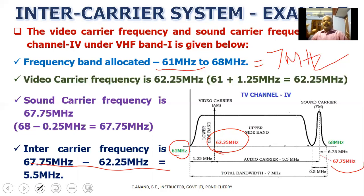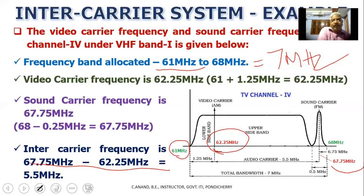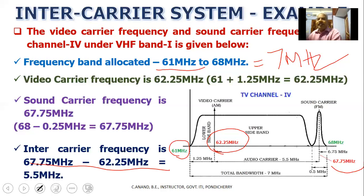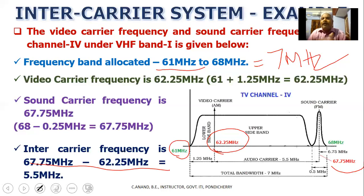So in a channel, the video carrier and sound carrier are separated by 5.5 MHz. To summarize: total bandwidth is 7 MHz, the video carrier is 1.25 MHz above the lower channel frequency, the sound carrier is 0.25 MHz below the upper channel frequency, and the separation between video and audio carriers is 5.5 MHz.